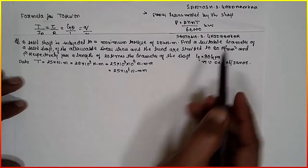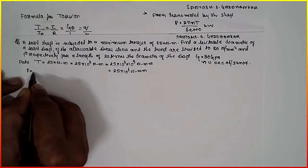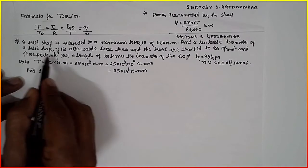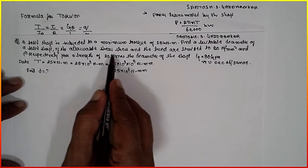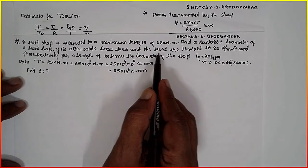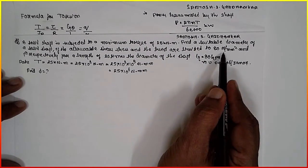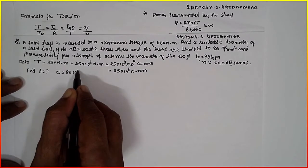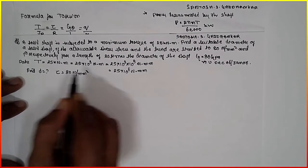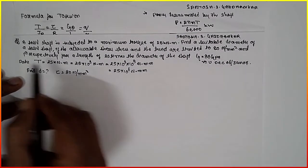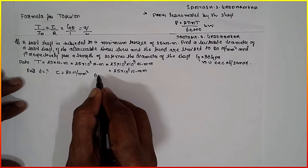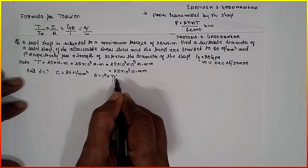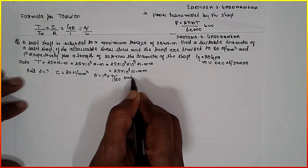Find the suitable diameter of a solid shaft if the allowable shear stress and the twist are limited to 80 N per mm squared and 1 degree. Tau is given as 80 N per mm squared. Theta is given as 1 degree, which has to be converted into radians using pi by 180.